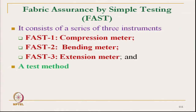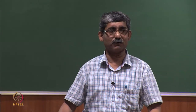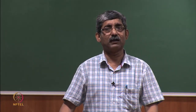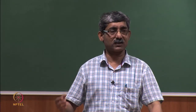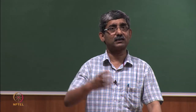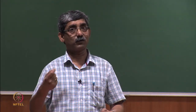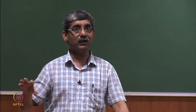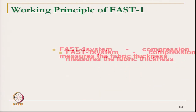The fourth one is not an instrument — it is a test method. The fourth is a dimensional stability test, which is inexpensive. For this fourth test we do not need any instrument — we can develop one system of measurement. These instruments are robust in construction. All four modules can be interlinked with the computer so their outputs can be interlinked, and ultimately we can get the information. Let us see the first one — the working principle of FAST 1, the compression meter.